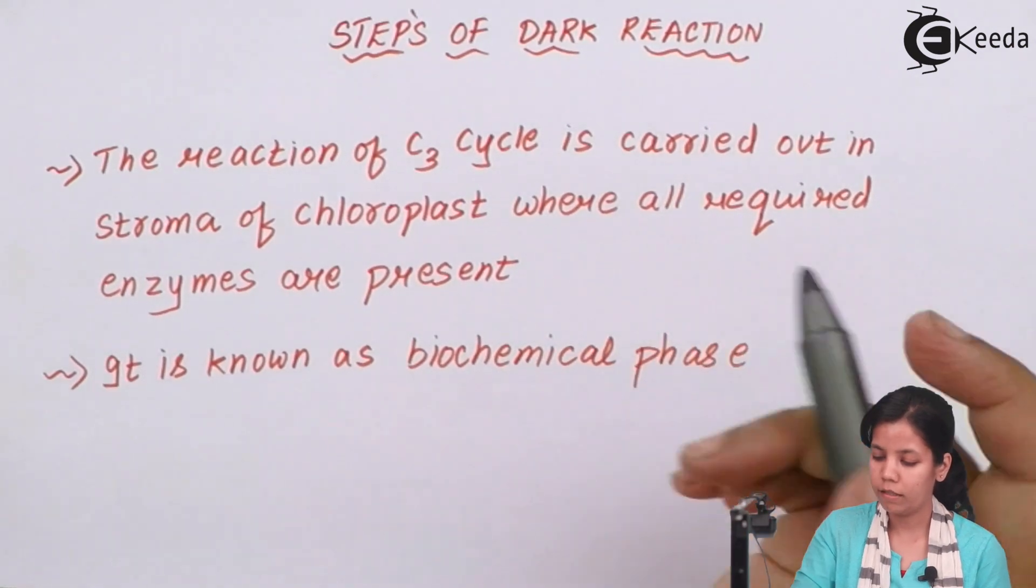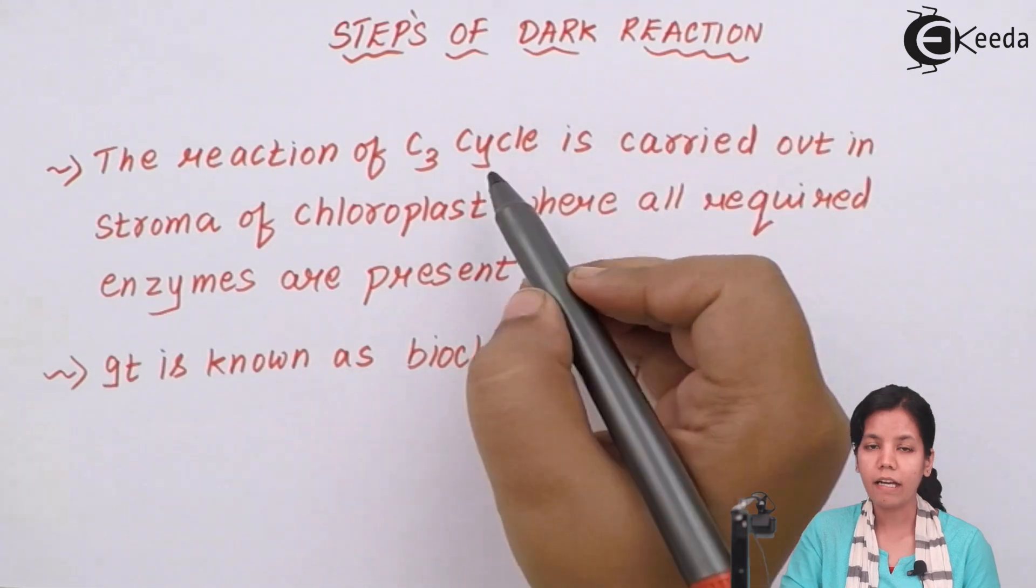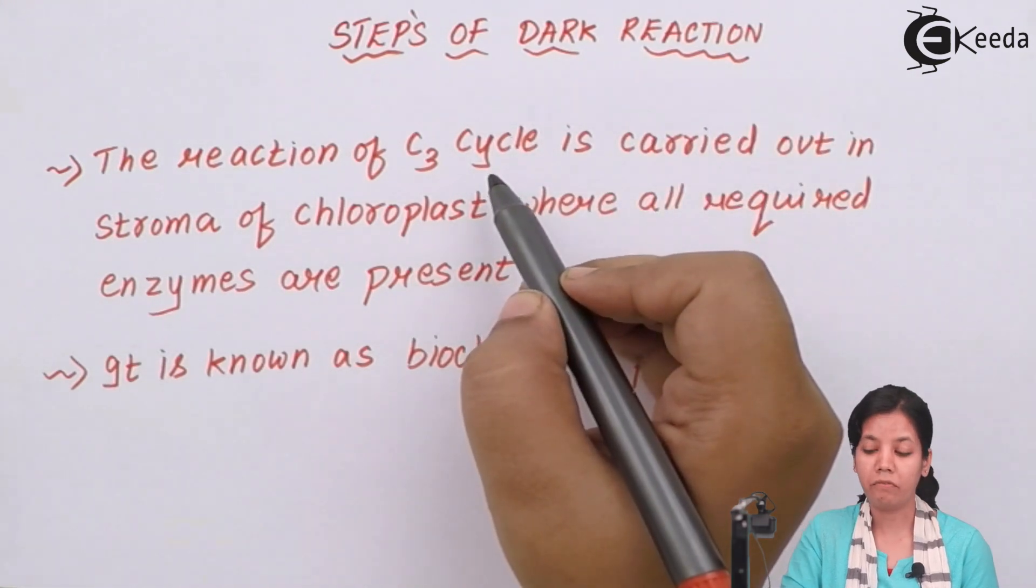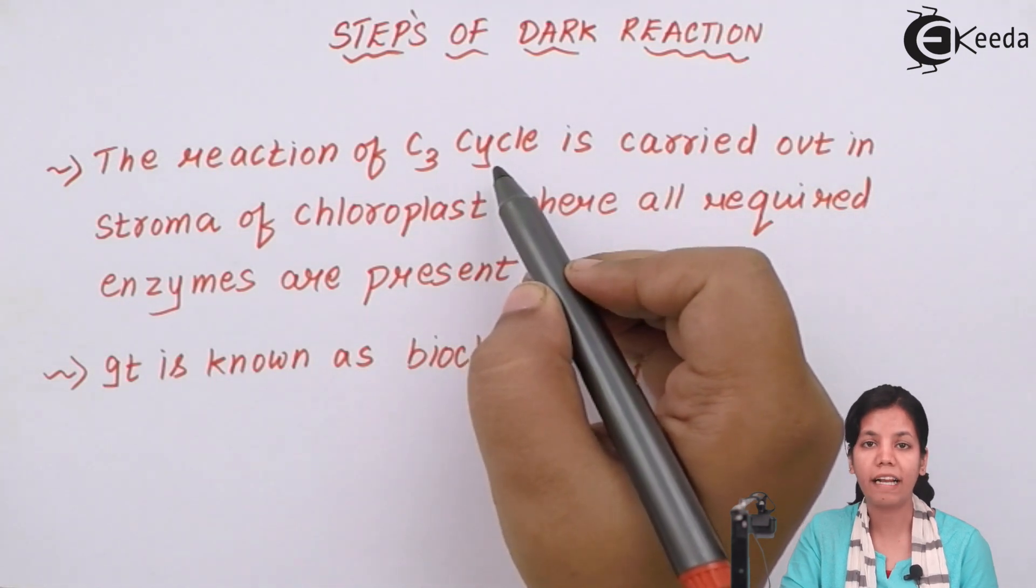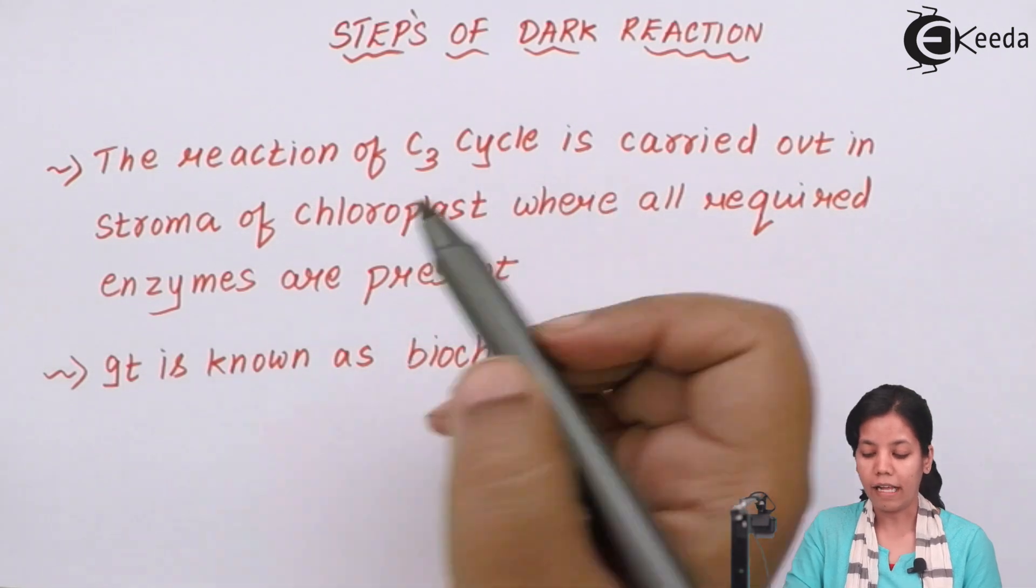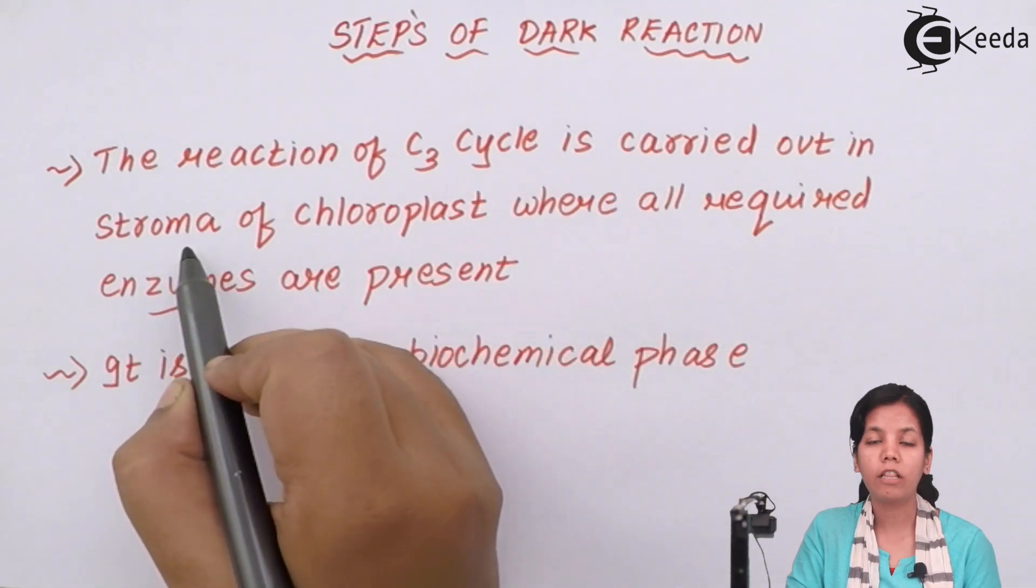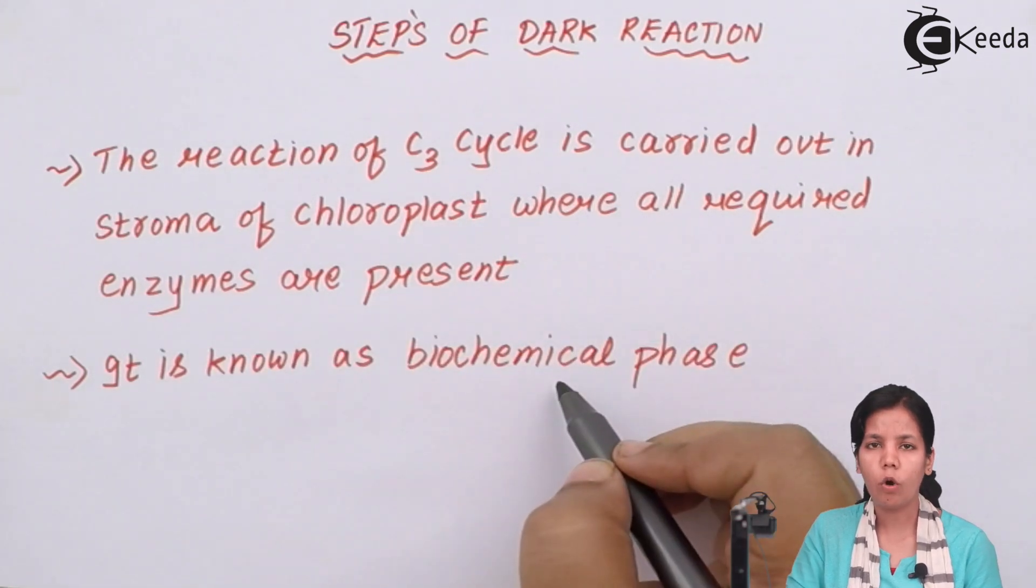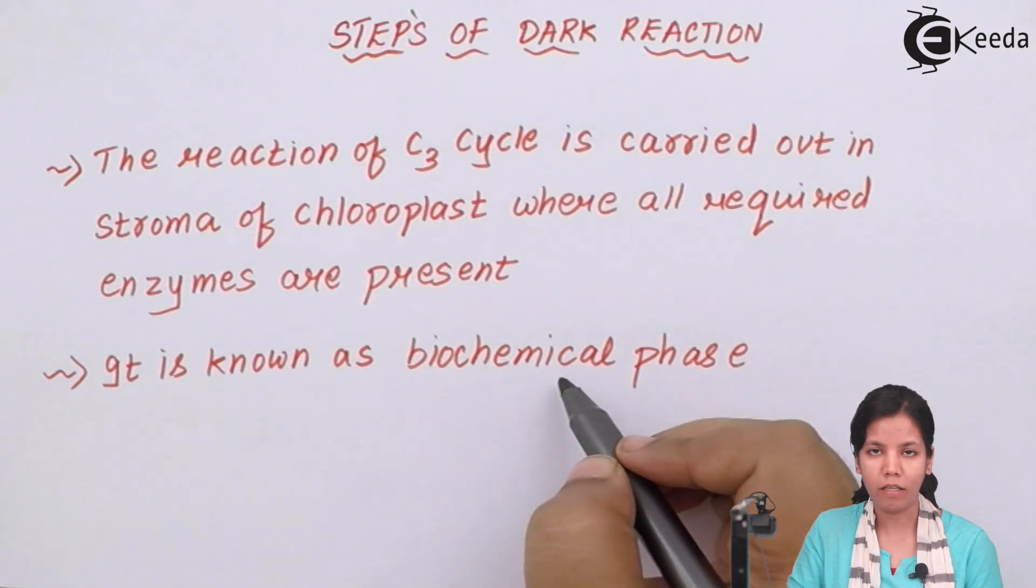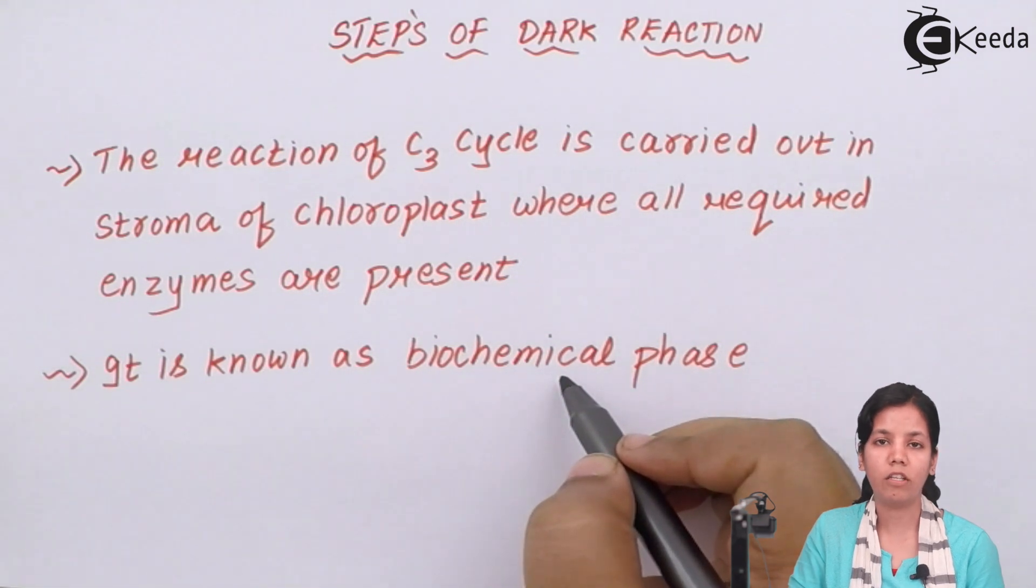Dark reaction has many different names. The first name is C3 cycle, because carbocytic acid or carboxylic acid is the first stable product that is formed in dark reaction. Dark reaction is basically carried out in the stroma of chloroplast, whereas light reaction or cyclic photophosphorylation is carried somewhere else. Dark reaction is also called as biochemical phase. Now, why does it call as biochemical phase? Because in dark reaction, RUBP is used and RUBP is regenerated again. There are chemicals which are used to start dark reaction or Kelvin cycle.